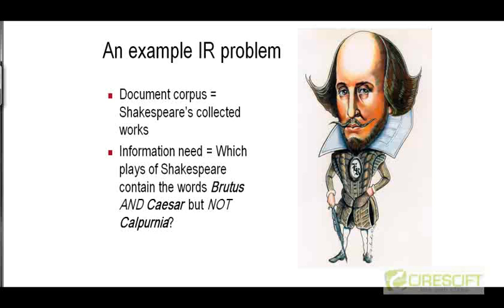Let's consider a very simple example of a scenario where the set of documents or the corpus that we have is something very small. Let's say it's just the collected works of Shakespeare, which is a corpus of unstructured or semi-structured data. Imagine that every play of Shakespeare is stored in its own file. Since there are about 37 plays of Shakespeare, we have 37 separate files stored in the same folder on your machine, and that makes up the document corpus.